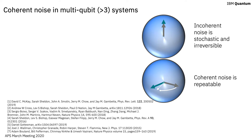Broadly, we can classify noise in a quantum system as two types: incoherent and coherent. Incoherent noise is stochastic and irreversible, originating from things like T1 and T2 events, and can be visualized on the Bloch sphere as a shortening of the Bloch vector. Coherent noise is repeatable, originating from miscalibrations and crosstalk. On the Bloch sphere, this can be visualized as an over or under rotation.